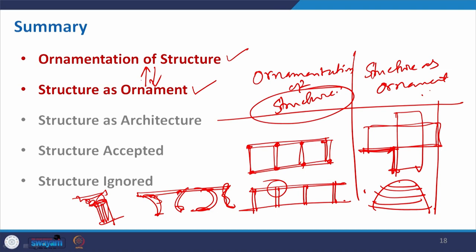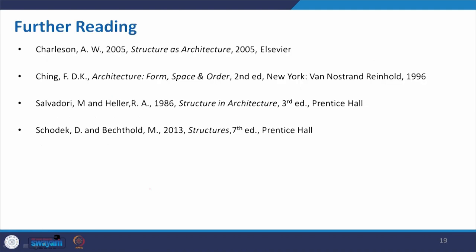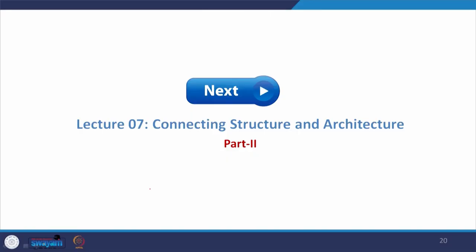In the next lecture we will discuss the remaining three categories: structure as architecture, structure accepted, and structure ignored. These are the reading materials — some information is taken from the book 'Structure and Architecture.' You can refer to those books and also go through the links provided under each picture. We will discuss the rest three categories in part 2. For this time, bye-bye, take care, thank you.